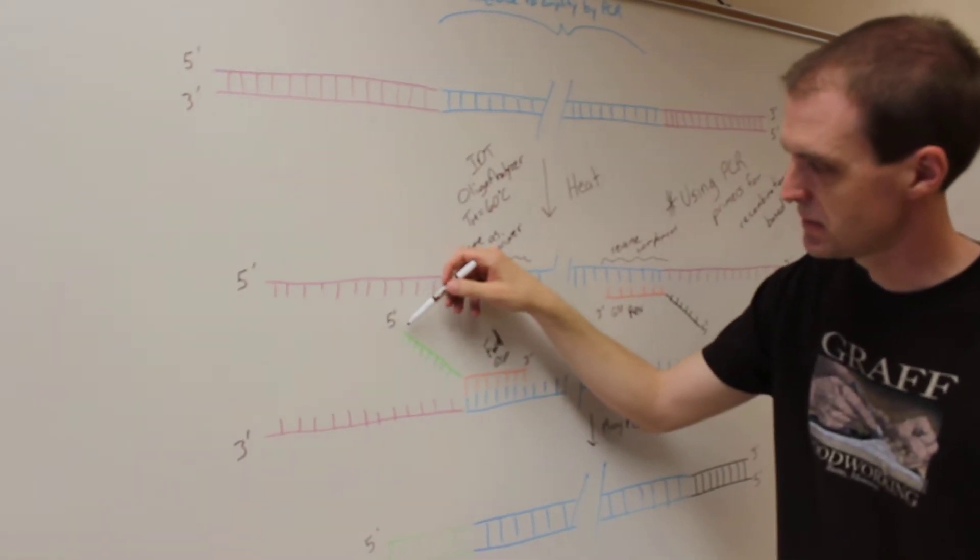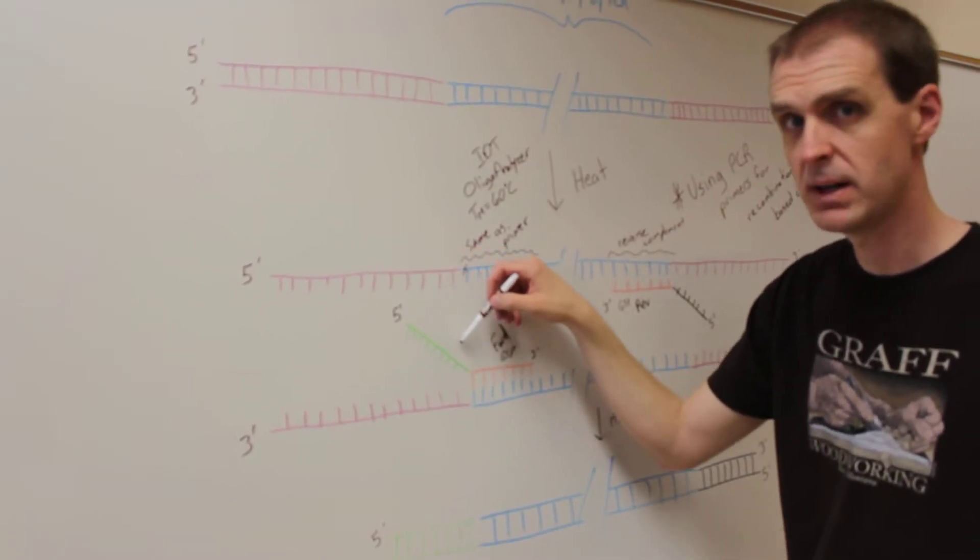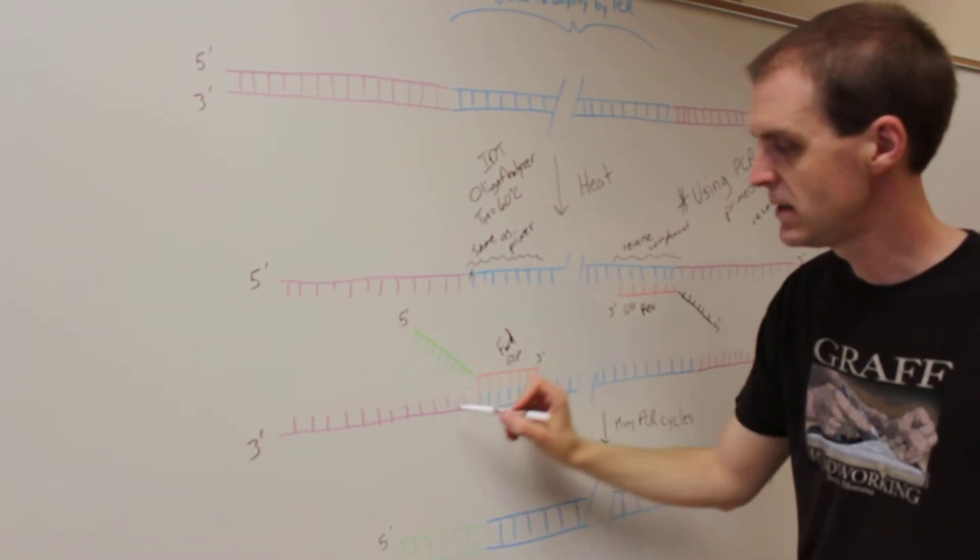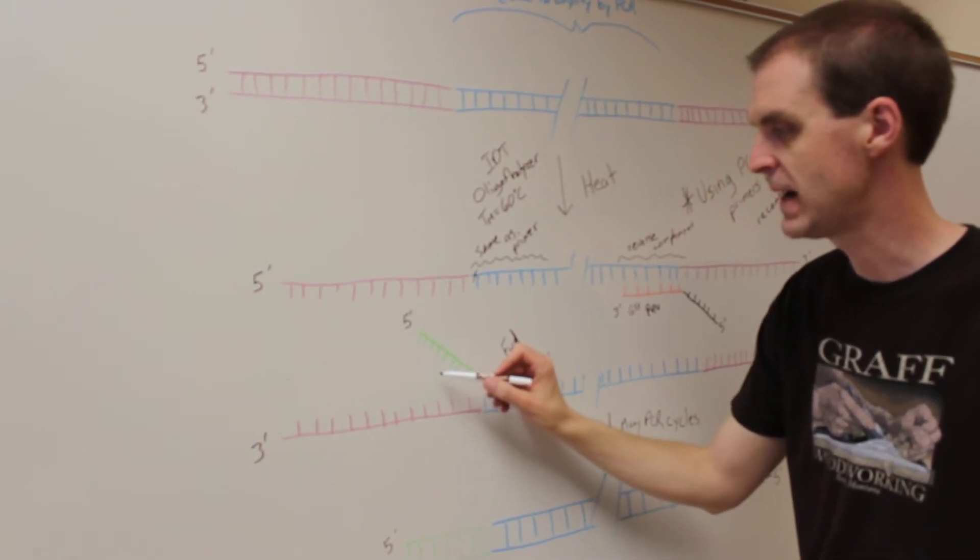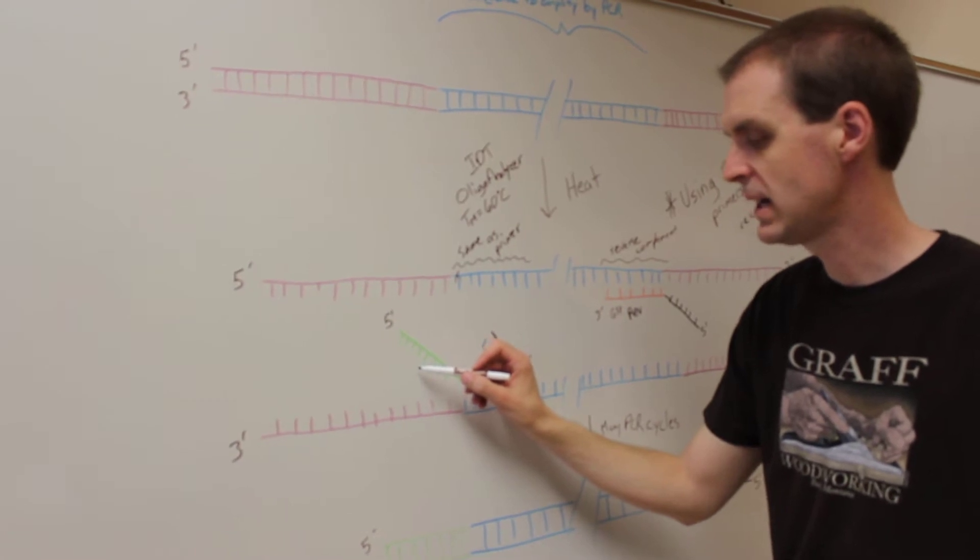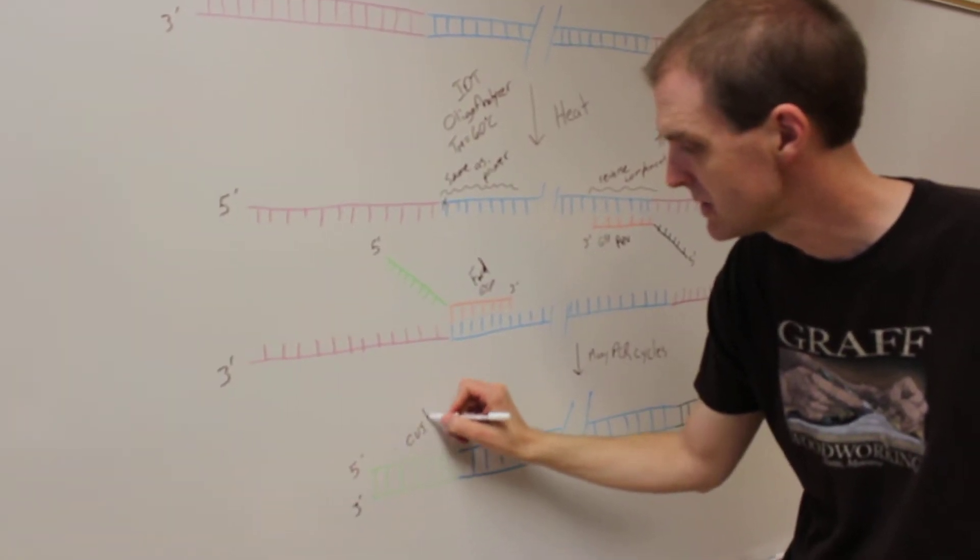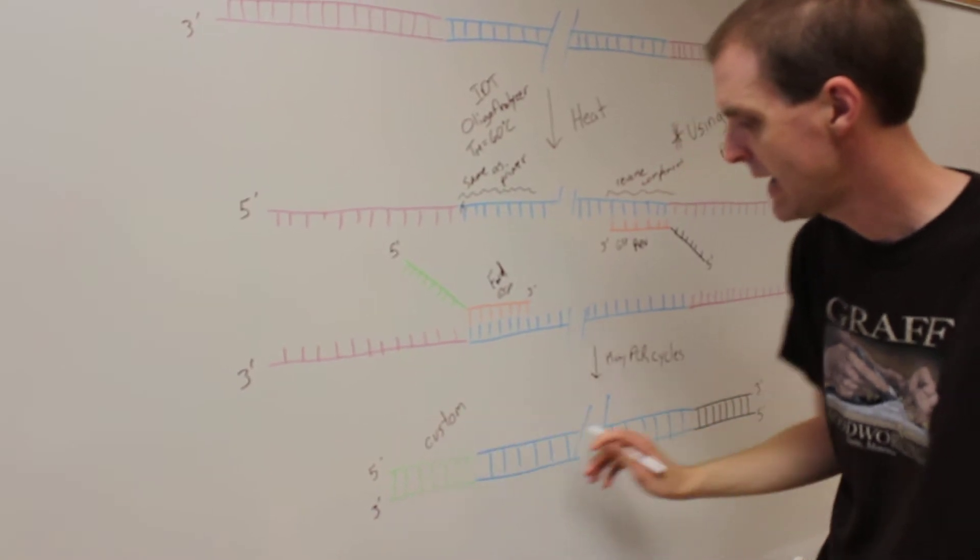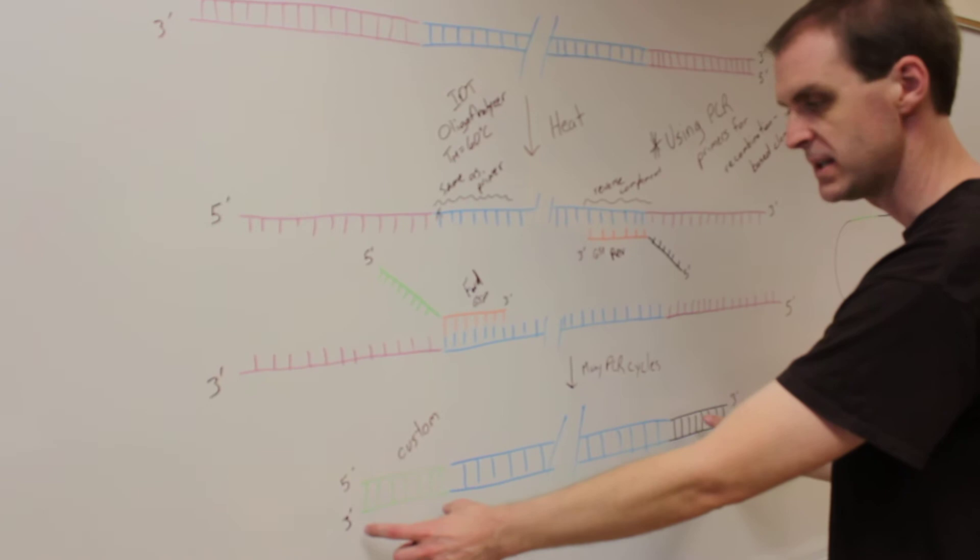But you also design in extra bases at the 5' end of your oligo that do not match up with any sequence here that you're wanting to amplify, but instead are designed so that you get custom sequence added on to each end of your PCR product.